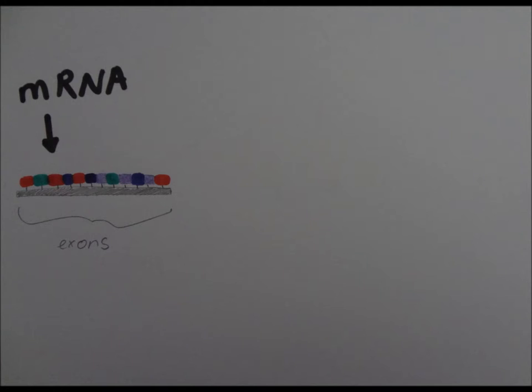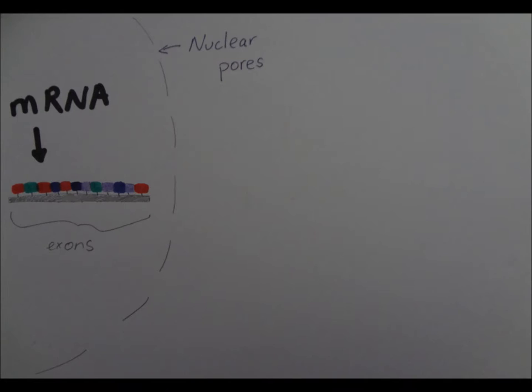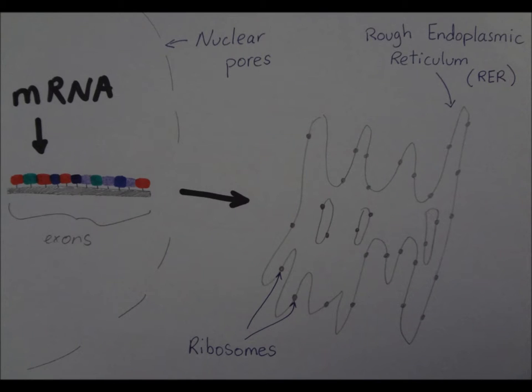As a result, a messenger RNA of exons exits the nucleus through its pores and attaches to a ribosome on the rough endoplasmic reticulum.